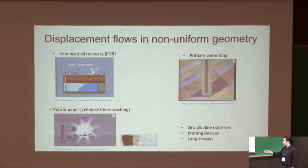zinc alkaline batteries, printing devices, or long airways are examples of where displacement flows in at least a degree of non-uniformity occur.